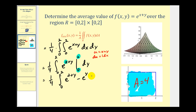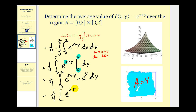So we're going to have one-fourth times e^(2+y) minus e^(0+y), which is e^y. Now we'll integrate with respect to y. The antiderivative of e^(2+y) is e^(2+y), and the antiderivative of e^y is e^y.